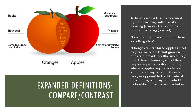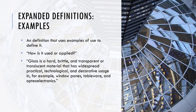The compare-and-contrast type asks: how does it resemble or differ from something else? This is often represented with a Venn chart — two overlapping circles showing differences outside and similarities inside. For example: 'oranges are similar to apples in that they are round fruits that grow on trees and provide healthy juices. They differ in that they require tropical conditions to grow, whereas apples require moderate to subtropical. They have a thick outer peel, as opposed to the skin of an apple, and they originated in India while apples came from Turkey.'